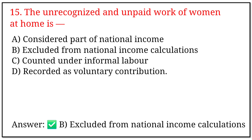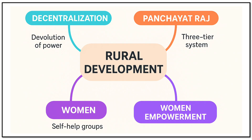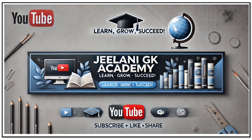Finally, a mind map of rural development covers: decentralization and devolution of power, Panchayat Raj three-tier system — Gram, Taluka, and Zila Panchayat — and women's empowerment through self-help groups.